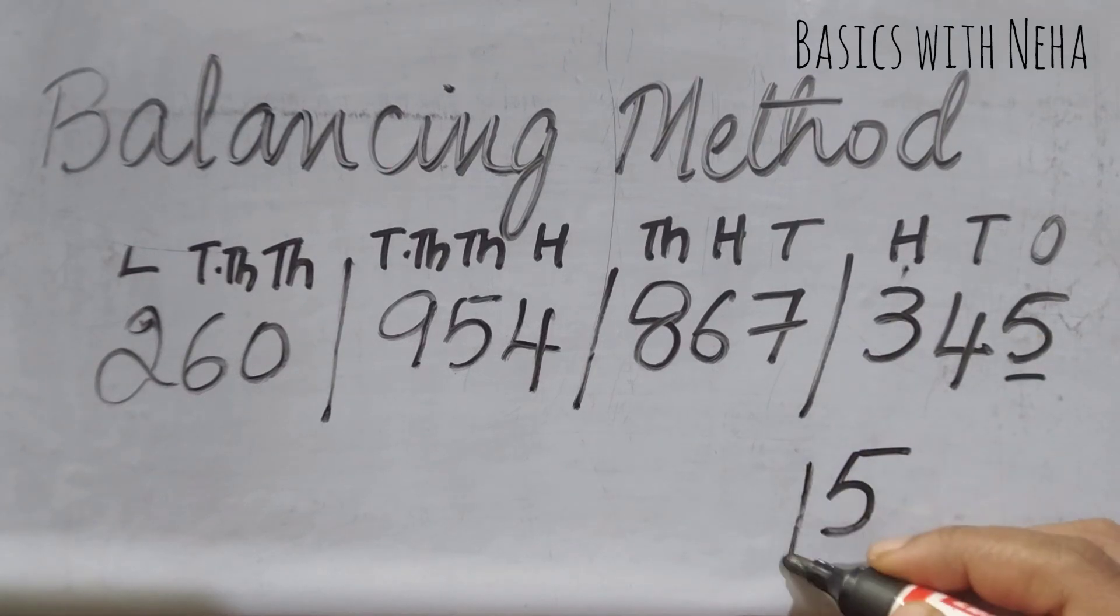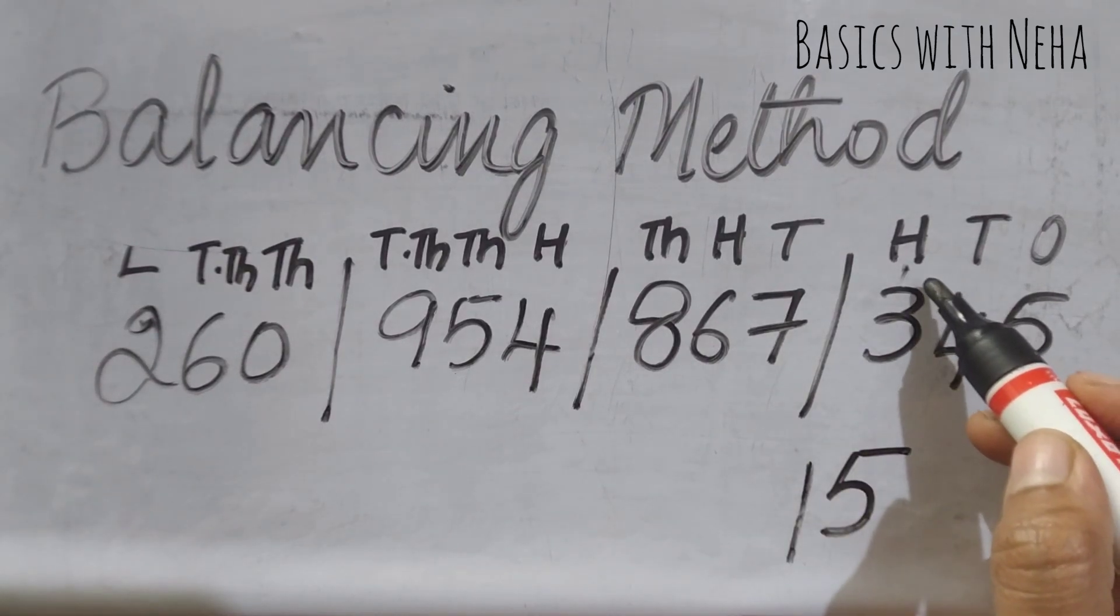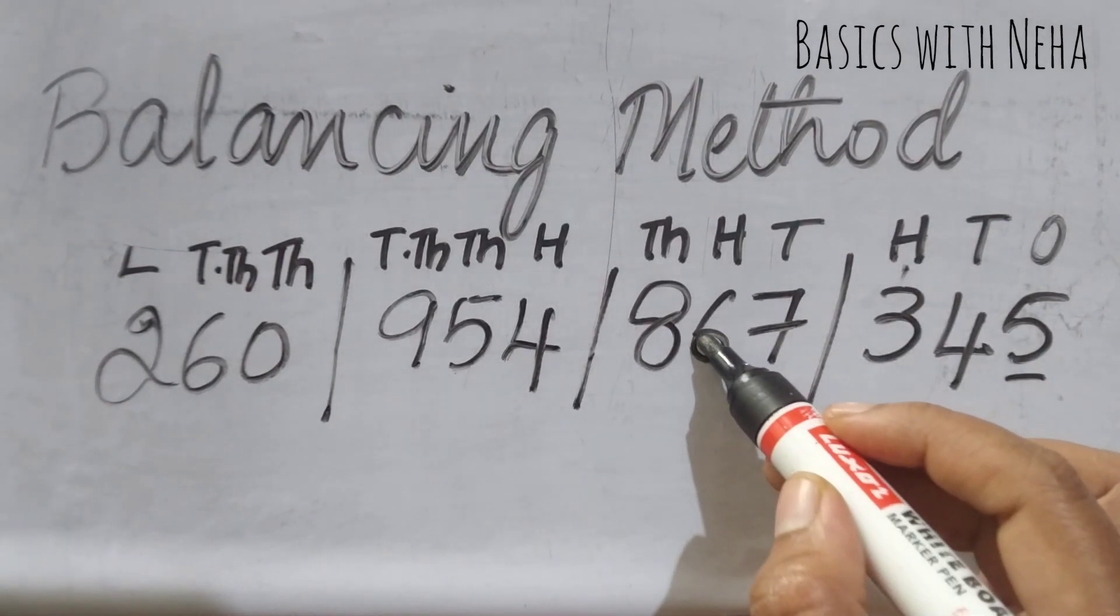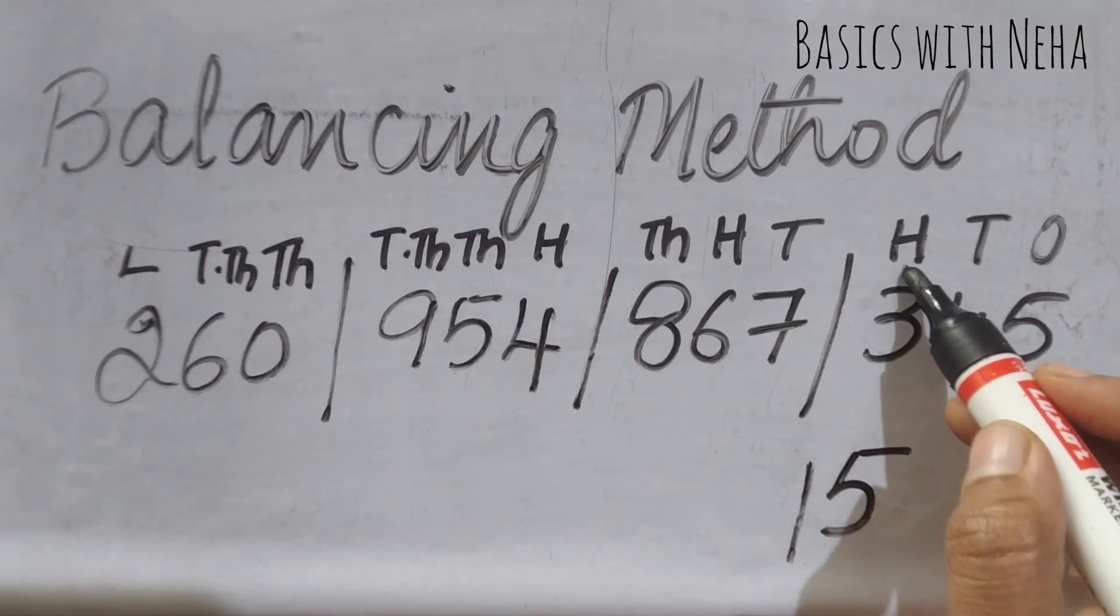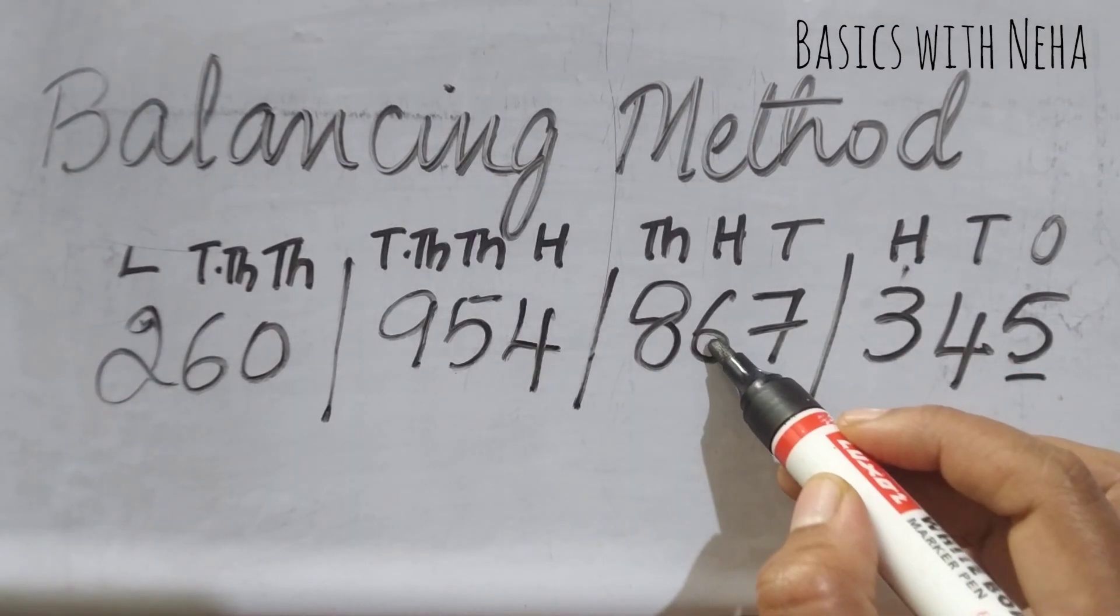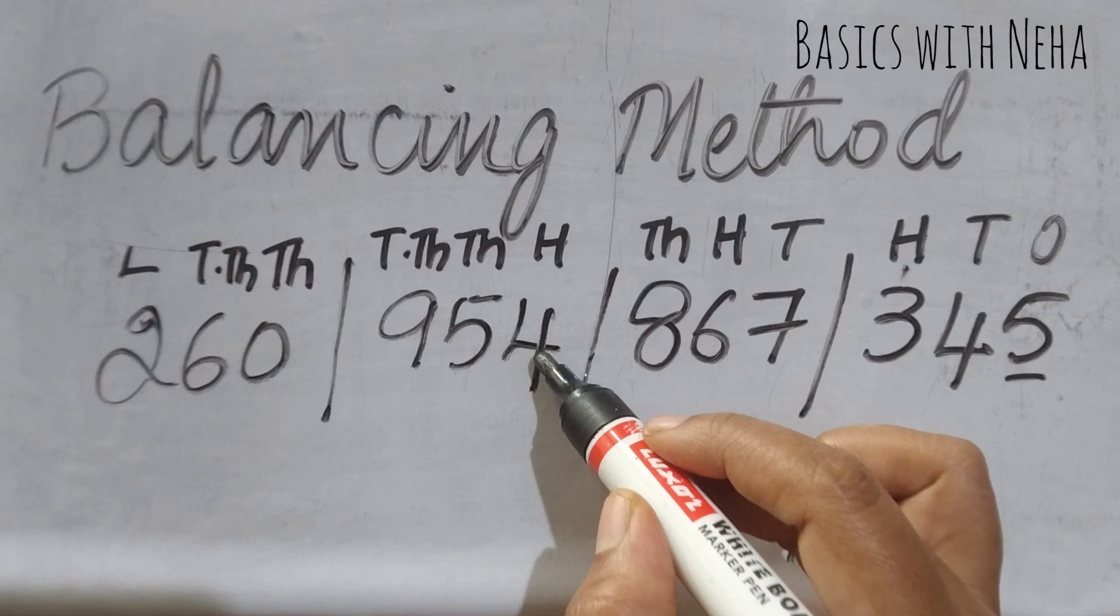Now hundreds place, I have three places: one, two, three. That is three plus one is four, four plus six is ten, ten plus four is fourteen. So I'm going to take it to the thousands place: fourteen, one four.